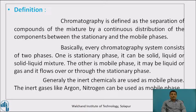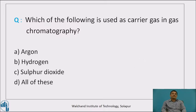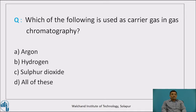For the mobile phase, only inert chemicals and inert gases are used. Inert gases like argon and nitrogen can be used as mobile phase in case of gas chromatography for the separation of a mixture into its pure components. Now I would like to ask you one question on the basis of the definition we have just learnt: which of the following is used as a carrier gas in gas chromatography?